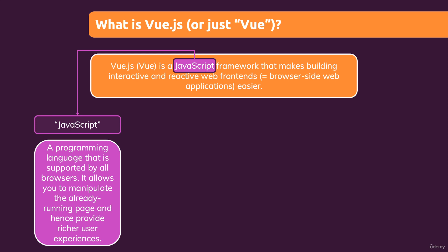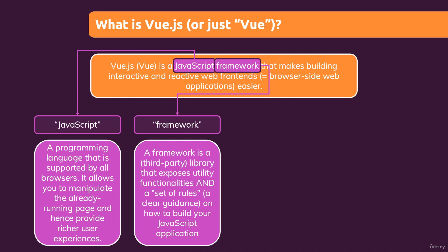Vue.js is not just JavaScript — it is a JavaScript framework. What does framework mean? A framework, not just in JavaScript but in any programming language, is basically a library, which means it's code not written by you but by someone else, which provides certain utility functionalities, certain methods, certain tools. And unlike a regular library, a framework will not just give you those extra functionalities, but it also gives you a clear guidance, a clear approach when it comes to building your application. It basically gives you a clear idea and structure of how to write your application code. So it's utility functions plus the rules.